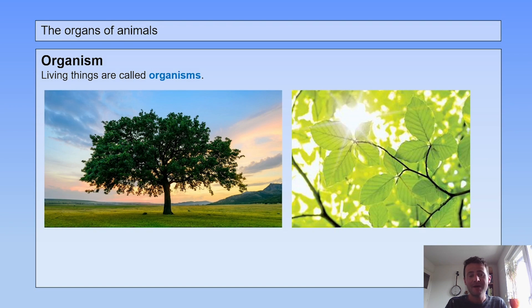And keep in mind that a tree is an organism, and it too has organ systems and organs. Leaves are organs, the roots are organs, and so on.